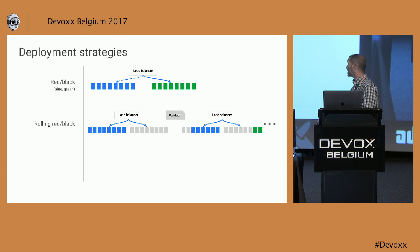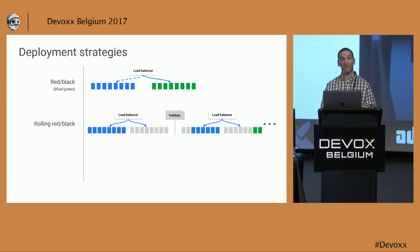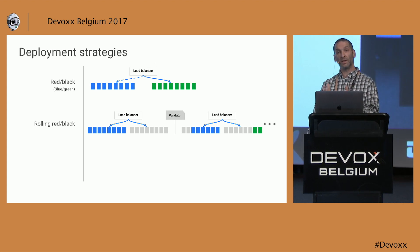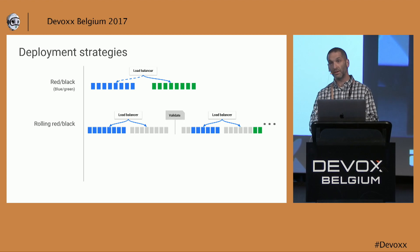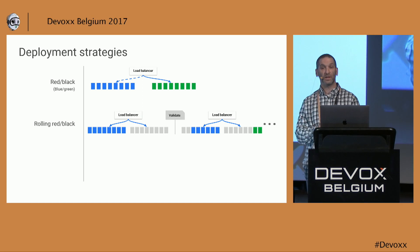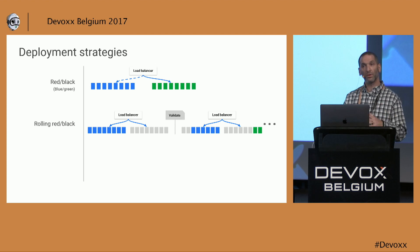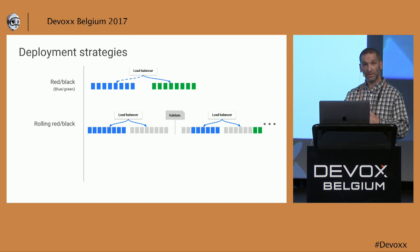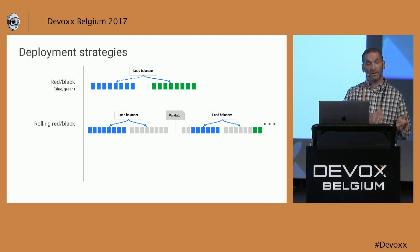There's a more advanced version called a rolling red-black, which is quite similar. The primary difference is instead of cutting over all the traffic 100%, you do it in finer-grained increments — a percentage-based or time-based approach, say 5%, 10%, 25%, and so on. You often gate these increments with some verification or functional test. A benefit is that since you no longer have to provision a full-size server group all at once, you can be smarter about provisioning — maybe several instances at a time, destroying old instances but leaving a certain number around, considering capacity management and costs.